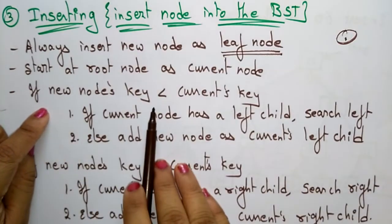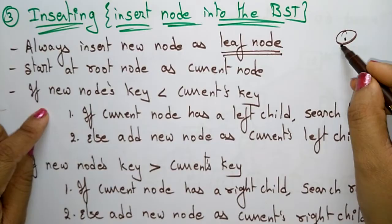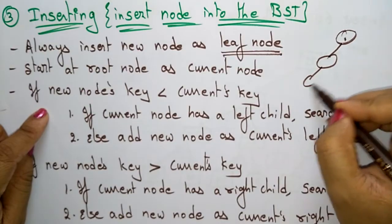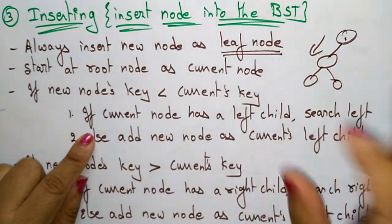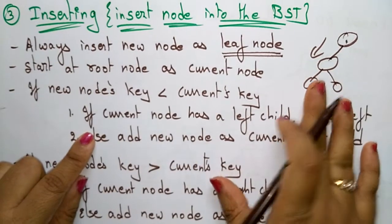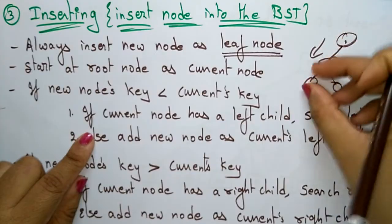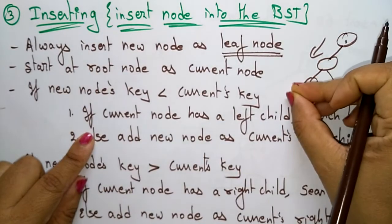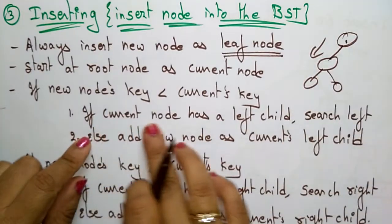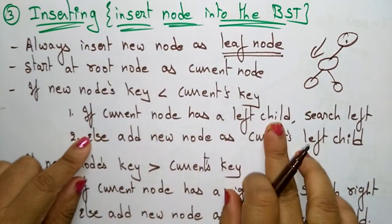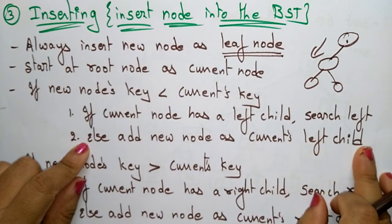If the new node's key is less than the current key, you have to search on the left-hand side. That means you have to insert the value in the left subtree. If the current node has a left child, search left. Else, add the new node as the current node's left child.